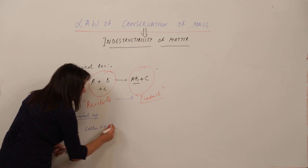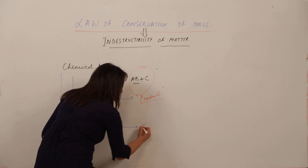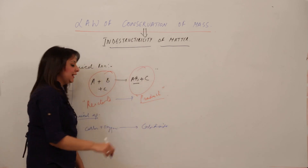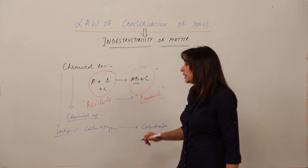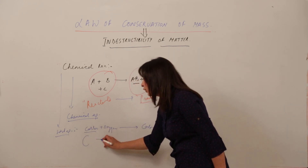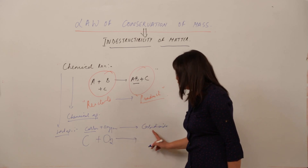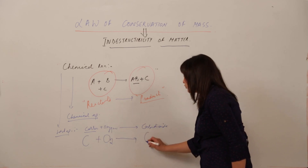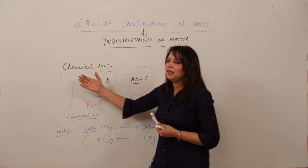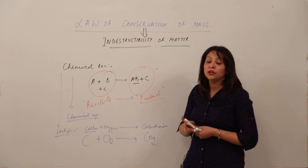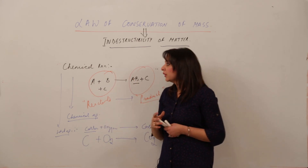In a word equation, for example: carbon plus oxygen — the plus sign means we are mixing them — gives rise to carbon dioxide, indicated by an arrow. In a chemical equation, we use symbols: C for carbon, O₂ for oxygen (since oxygen exists as a diatomic gas), an arrow for 'gives rise to', and CO₂ for carbon dioxide. I'm covering this so you are familiar with chemical reactions and chemical equations before we discuss the law of conservation of mass.